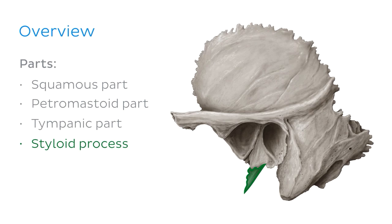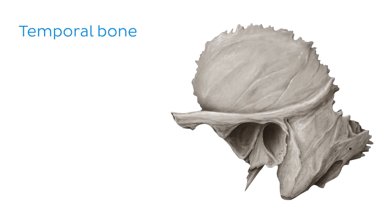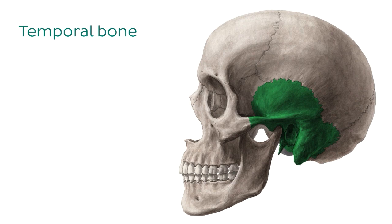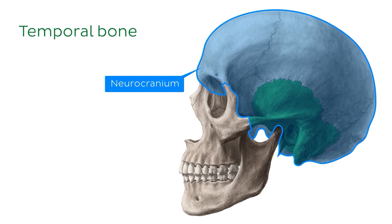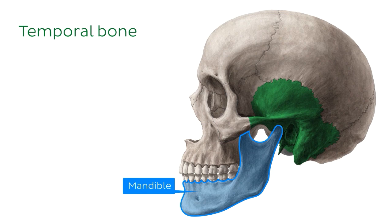Let's begin with a brief introduction about the temporal bone. The temporal bone is a bone located bilaterally on either side of the skull. More specifically, it is a part of the cranium. This image shows the skull in a sagittal or lateral view and the temporal bone is highlighted in green. It is located inferior to the parietal bones, posterior to the zygomatic bone and mandible, and anterior to the occipital bone.